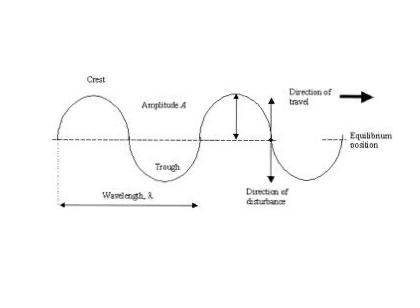We also need to be aware of some other key features of a transverse wave. We have what are referred to as crests or peaks, and troughs. The crest or peak and the troughs are the maximum distance from the equilibrium — the line in the middle, sometimes referred to as a zero line on an oscilloscope. The distance between the equilibrium and the crest, and the distance between equilibrium and the trough, will be the same, and we call this distance the amplitude.